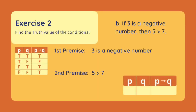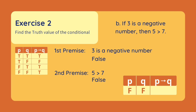Let's have another one. If 3 is a negative number, then 5 is greater than 7. Our first premise is '3 is a negative number.' This is false because 3 can be a negative or a positive number. Our second premise is '5 is greater than 7.' This is also false because 5 is less than 7. Since both our premises are false, our conditional is true.